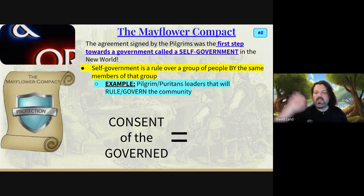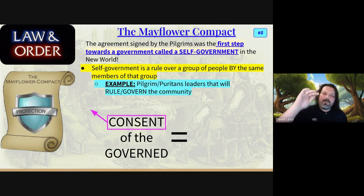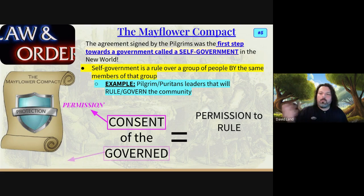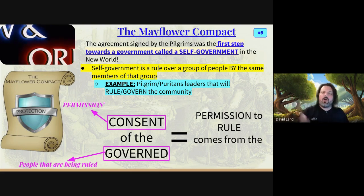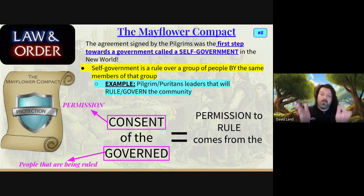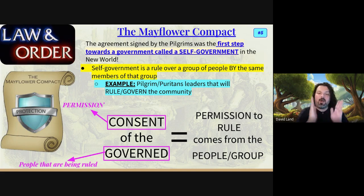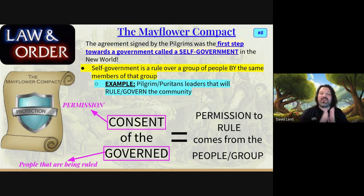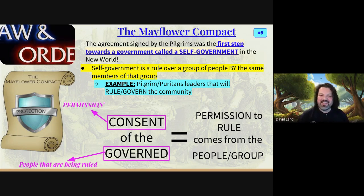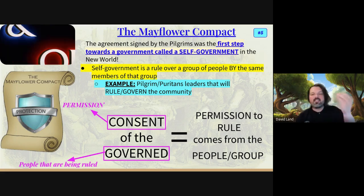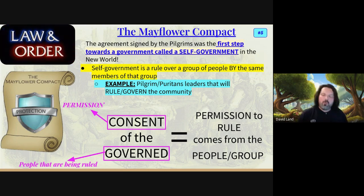By signing the Mayflower Compact, the pilgrims agreed to be ruled. The idea coming out of this social contract is called consent of the governed. Consent means permission — permission to rule. So who are the governed? The governed are the people being ruled. The pilgrims signed the document saying: I give permission for someone to rule me, to lead me. The people themselves are agreeing to be ruled. Think about that — you are giving someone power over you in government to lead you. It is a very American ideal. Give up your power, let someone lead you, and you can be safer because we're all going to be in the same boat, following the rules and protecting each other. That is a great American ideal for the future.